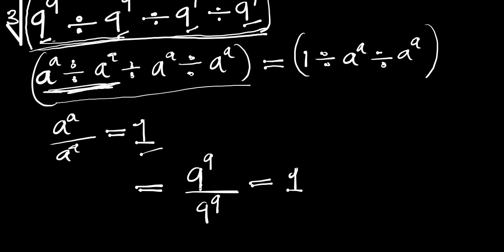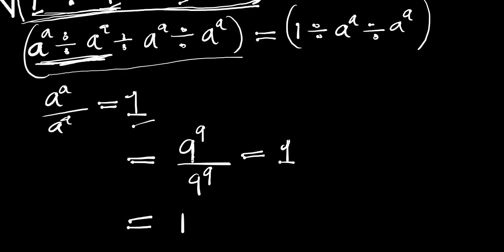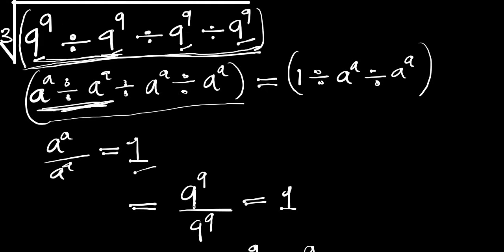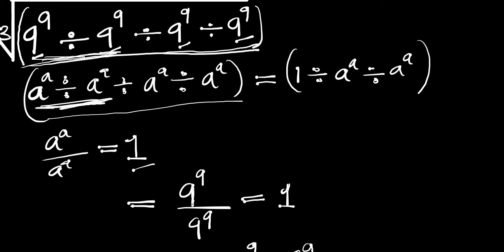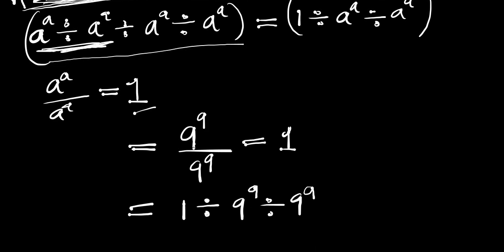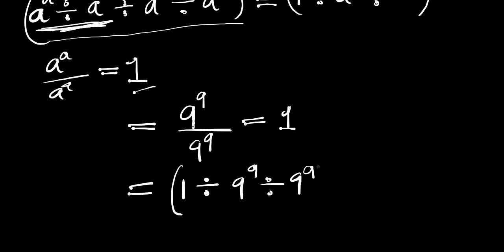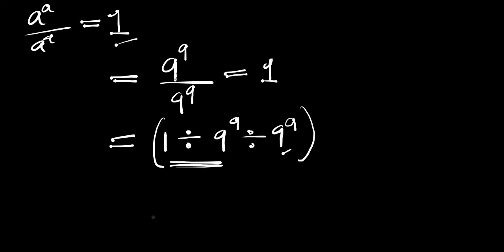So if we replace these first two terms by 1, that means we are going to have 1 divided by 9 to the power of 9, divided by 9 to the power of 9. That is what we have reduced this to. Now let's work on this. If you have 1 divided by 9 to the power of 9, divided by 9 to the power of 9, we also concentrate on these first two terms: 1 divided by 9 to the power of 9.